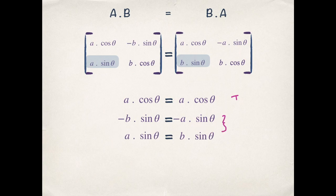Now note that these two equations are the same. You multiply this equation by minus 1 and reverse it to get this equation. Now last equation is b cos θ equals to b cos θ. So this is also true.